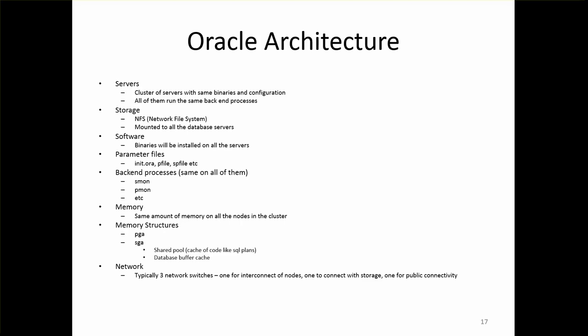For storage, you have network-mounted NFS — network file system — which will be mounted to all database servers. For software, you will typically see something like /u01/app/Oracle and you will have all your Oracle binaries installed there. You need to have the same version of binaries on all of them so that your clustered Oracle database runs without issues. You will also see parameter files like init.ora, pfile, spfile, etc. The backend processes have already been covered. Memory should be the same across all nodes in the cluster, otherwise you will run into issues. Memory structures include PGA, SGA, etc. SGA in turn has shared pool and database buffer cache as well.